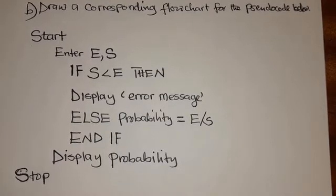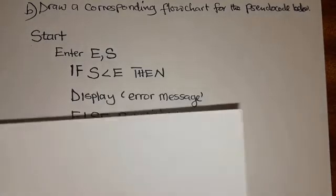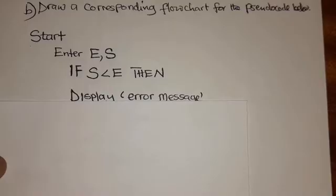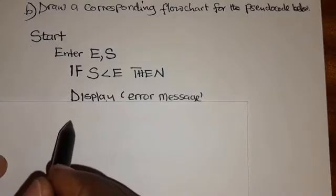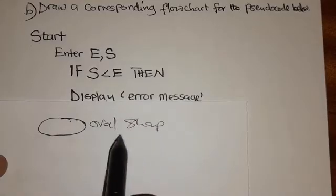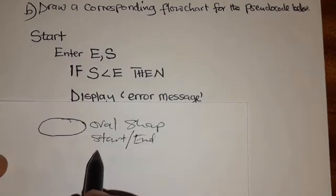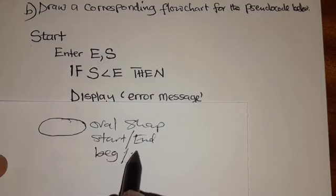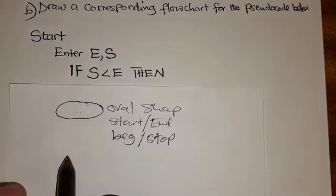This question doesn't miss every year in math for those doing ECZ. Before we answer, there are four shapes we need to understand. When they say start, the shape used to start a flowchart is an oval shape. This is used for starting or ending — to begin or to stop.